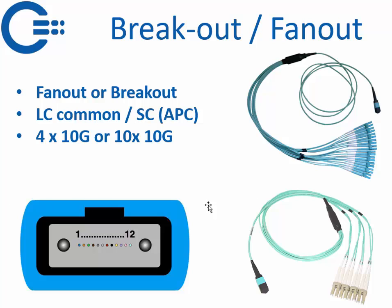For MPO you also have the fan-out, also called breakout — this is used a lot. You have the MPO connector breaking out into LC patches or SC patches. It can be 4x10G, and if you have an MPO 24 it's 10x10G, so you will have 20 connectors on the breakout end.